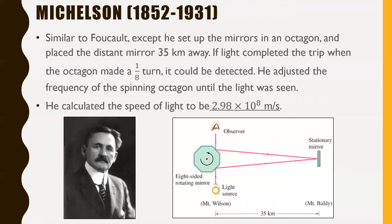Now the last way we're going to look at is Michelson, who lived from 1852 to 1931. He used something very similar to Foucault, except he set up the mirrors in an octagon, and then placed the distant mirror way further away than Foucault did at 35 kilometers away. If light completed the trip when the octagon made a one-eighth turn, because of course there's eight sides to it, so if it made one-eighth turn, it could be detected. In other words, the only way that the light from the light source could be detected is if it bounced back exactly as this rotating octagon made one-eighth of a turn, or two-eighths of a turn, or three-eighths of a turn, as long as it had an actual properly angled side to it right as the light is coming and striking it, then that's how he knew it was going to work just fine. So he adjusted the frequency of the spinning octagon until the light was seen. So he just changed how fast this thing was spinning just until the point where the light was first seen. So with this method, he was able to calculate the speed of light to be 2.98 times 10^8 meters per second, which was outstandingly close. He did a very good job, especially given that he did this over a hundred years ago.